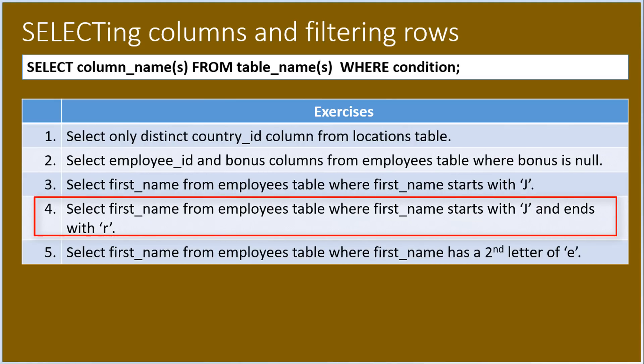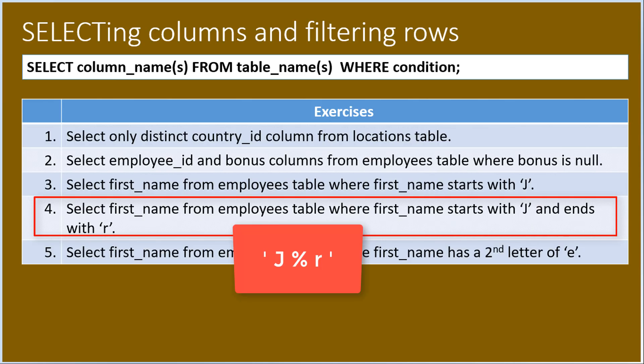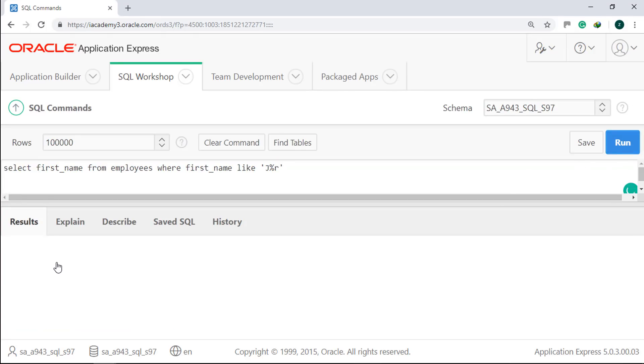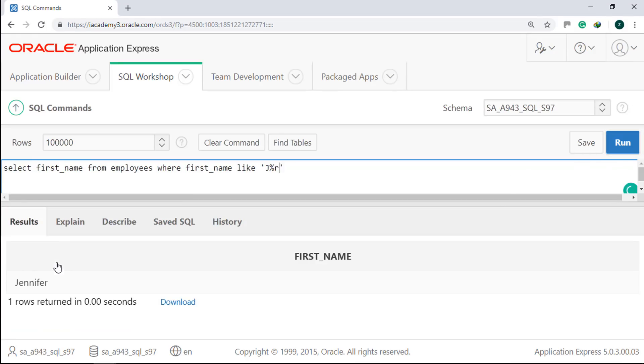Number four, we will select first_name from the employees table where first_name starts with J and ends with R. Therefore, our pattern here should be J%R. Run it. Only one name matched.